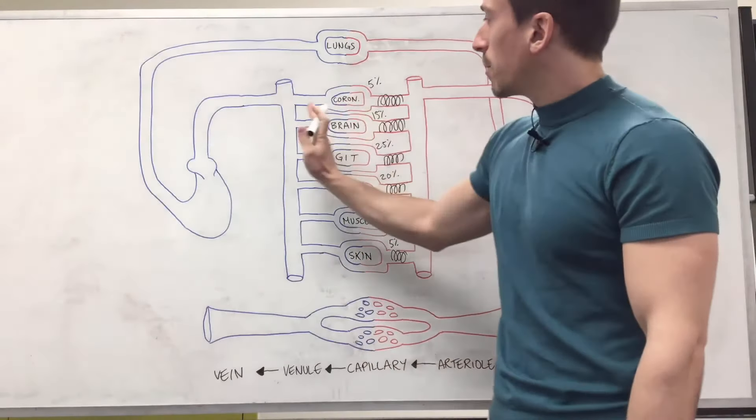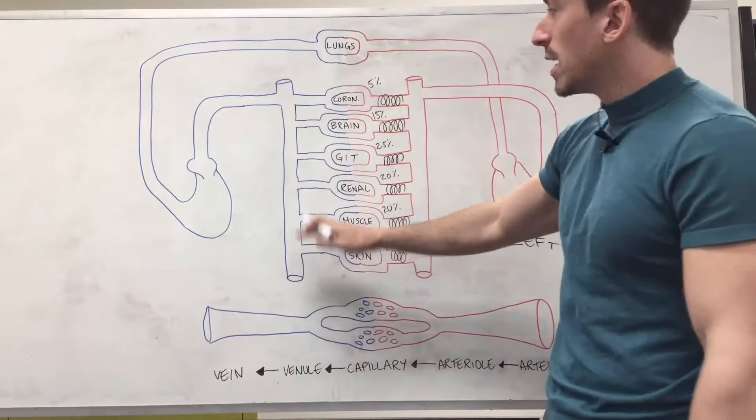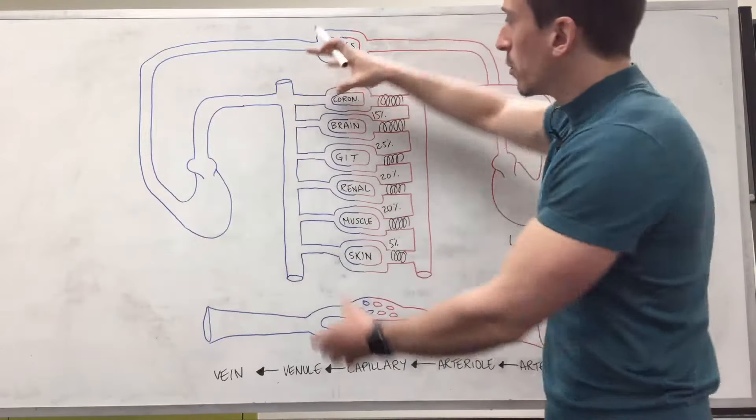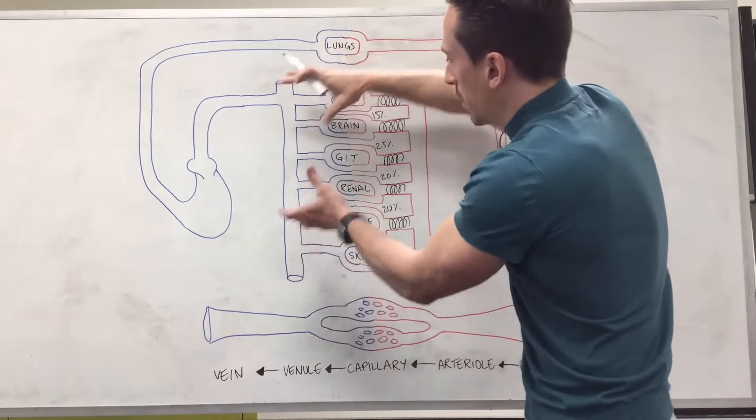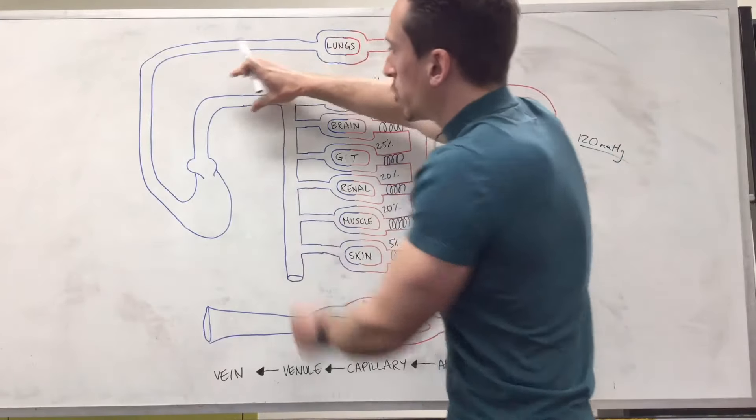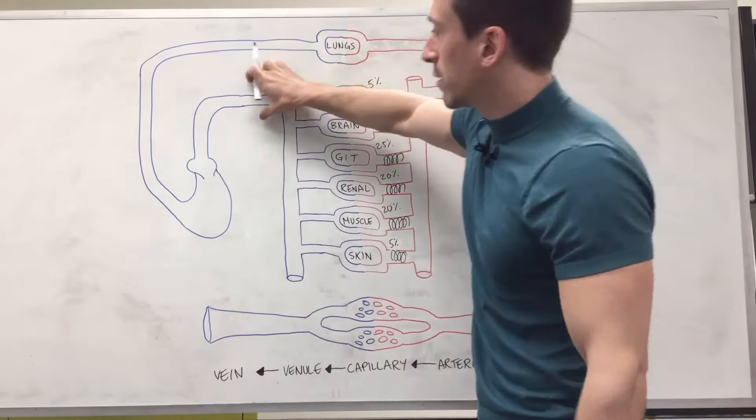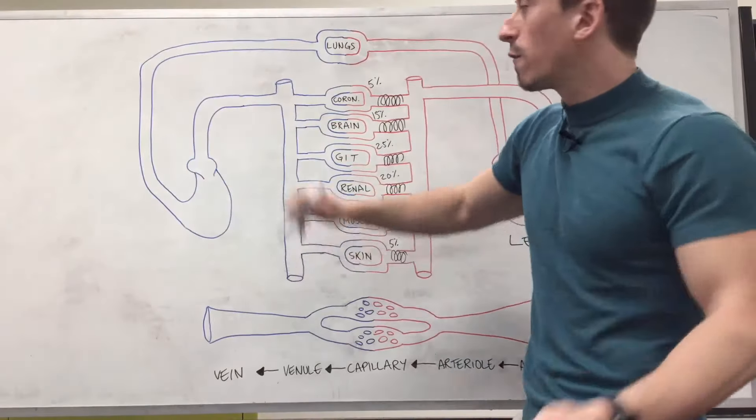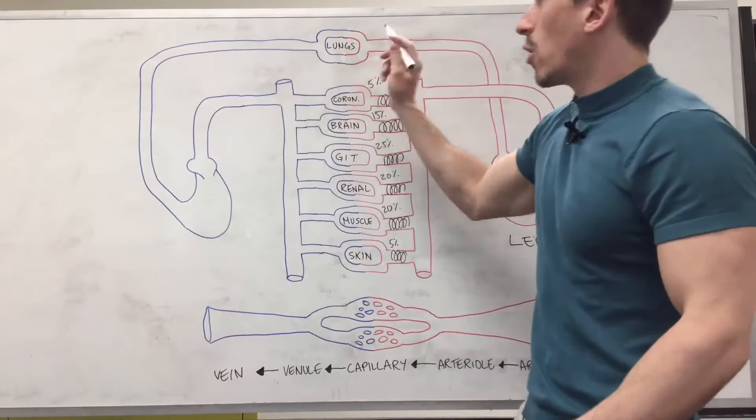Then we move on the other side of the capillary bed where we have venules and then veins. Venules gather all that blood that's just been exchanged at the capillary beds and they then put them into a vein or multiple veins, larger vessels that go back to the heart and we know from there it goes to the lungs to get that oxygen.